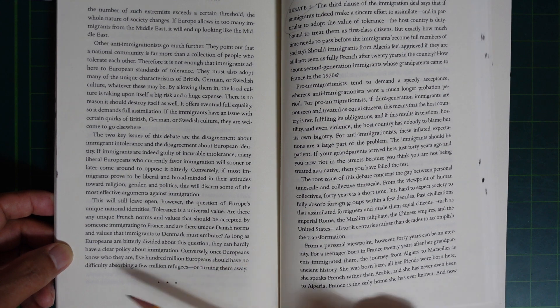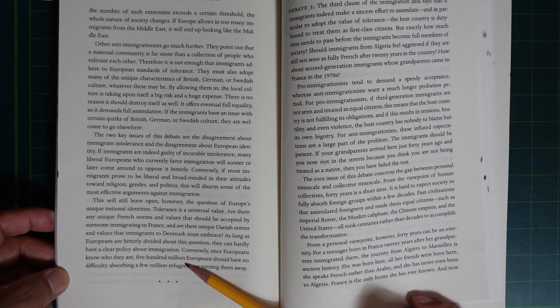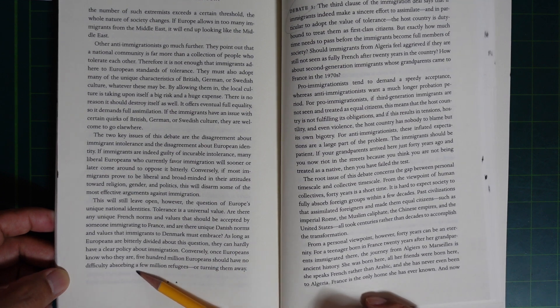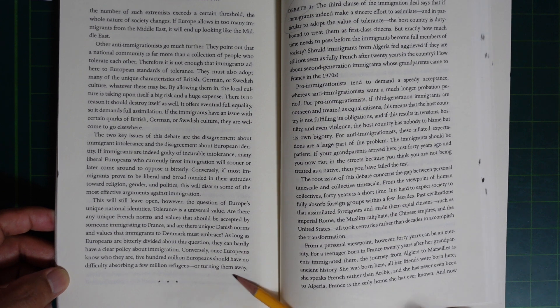they can hardly have a clear policy on immigration. Conversely, once Europeans know who they are, 500 million Europeans should have no difficulty absorbing a few million refugees or turning them away.